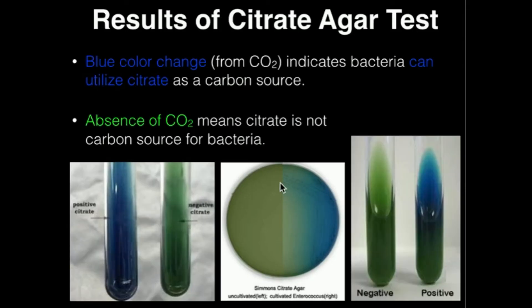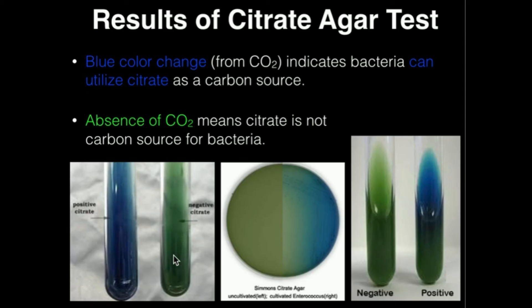In some cases you can do this on a plate and in some cases you can do it in a tube. Blue color changes are positive for citrate, meaning the bacteria can use citrate as a carbon source. In this picture on the left, the result on the left side is a positive citrate result. Same thing on the right side of the right figure — this is a positive result because of the blue. In some cases the blue may not be distributed all the way to the bottom of the tube, but you should see blue. If it's a negative result, you will see absolutely no blue — it's all green, as with this negative result in the figure on the left.